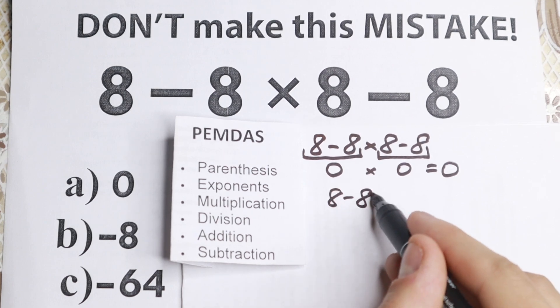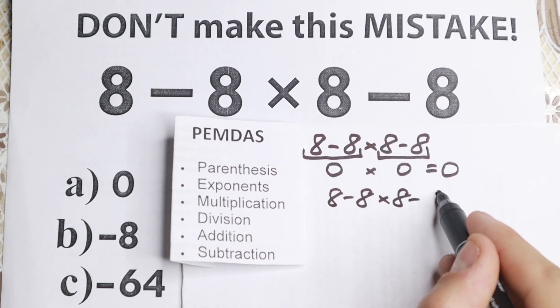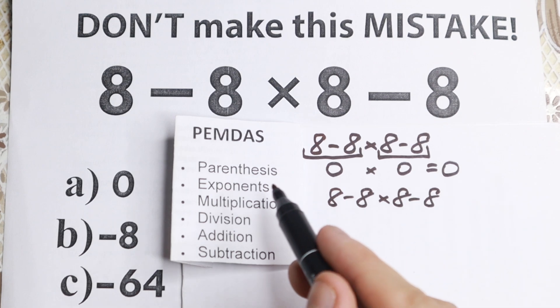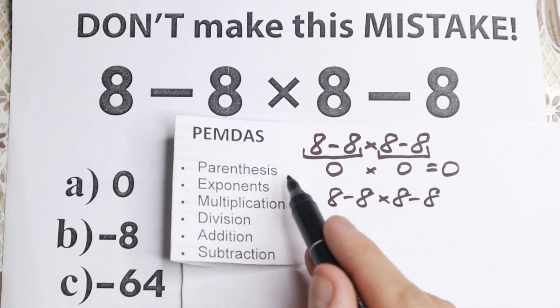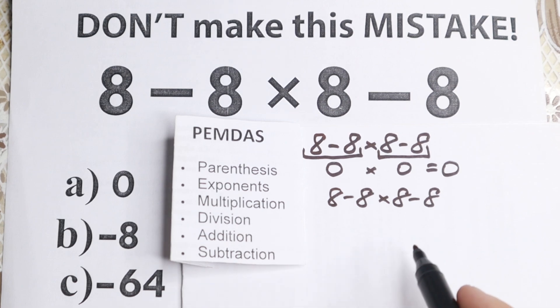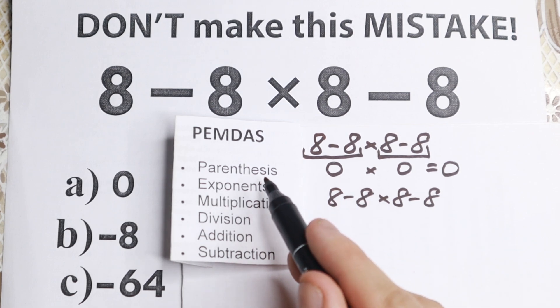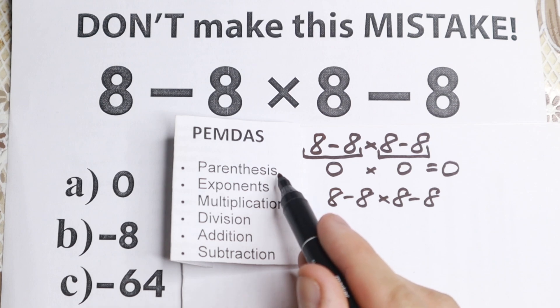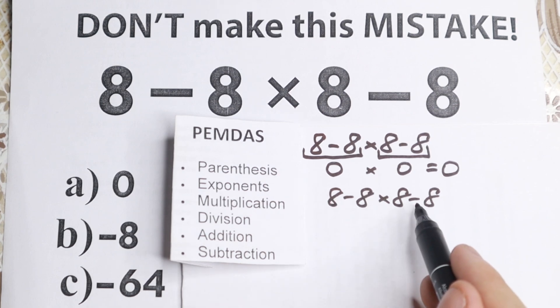So I re-read this problem: 8 minus 8 times 8 minus 8. And what do these orders tell us? We start with parentheses, then exponent, multiplication, division, and addition, subtraction. If we walk according to this order of operation, the first one is parentheses. Are there any parentheses right here? No, I don't see any of those.